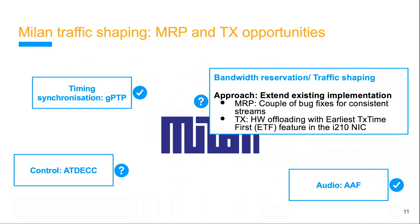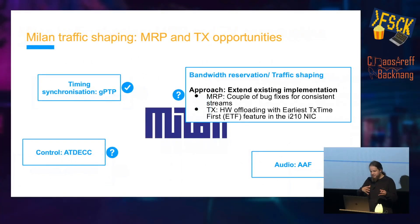Bandwidth reservation and traffic shaping are tightly coupled. For bandwidth reservation, there is the MRP protocol — a signaling protocol where bandwidth requirements are communicated between participants — which is already part of AVB. We identified and fixed a couple of bugs there. For traffic shaping, as a source you need to obey the transmission opportunity windows for TSN: 8,000 packets per second, one packet every 125 microseconds. The Intel i210 network card has hardware offloading features for this, including the earliest txtime first feature, which we used.